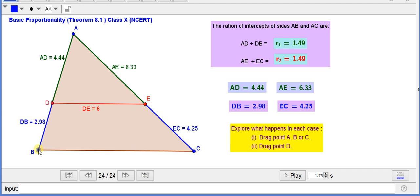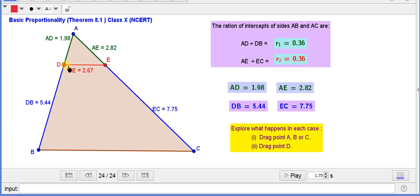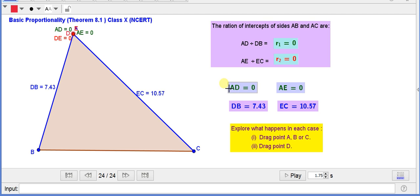Now, if I want to drag this point D to A, now D is coinciding with A, then what happens? AD is equal to 0 and similarly AE is also 0. So, 0 divided by 7.43 and AE divided by 10.57, the ratio R1 and R2 are equal to 0. 0 divided by something, it will give only 0.